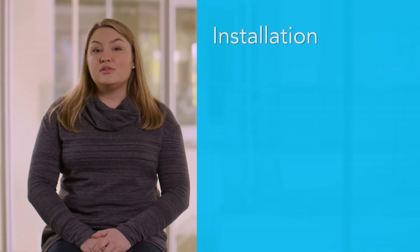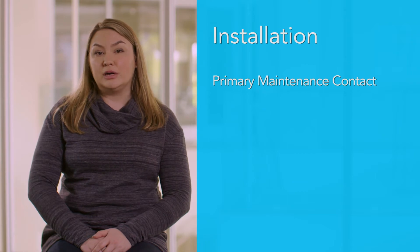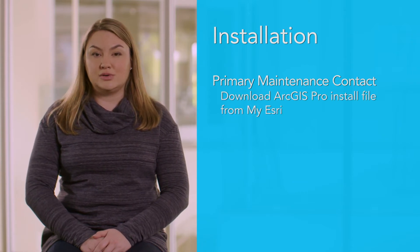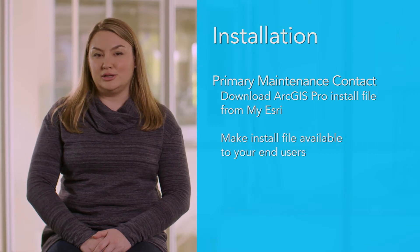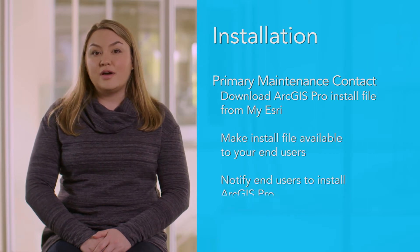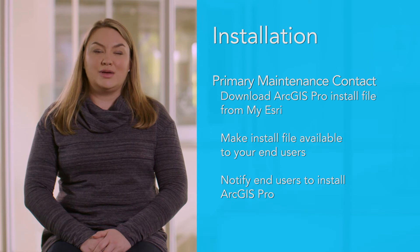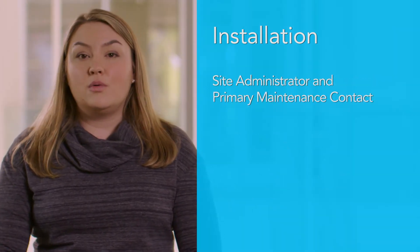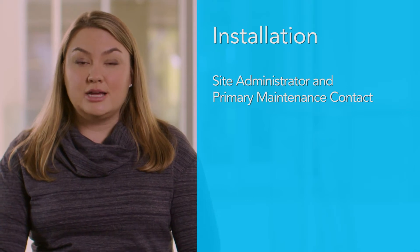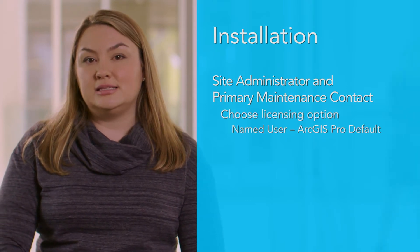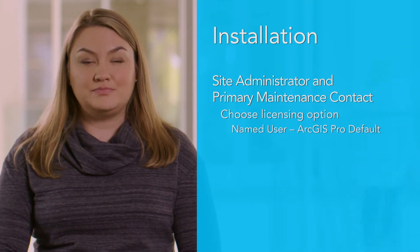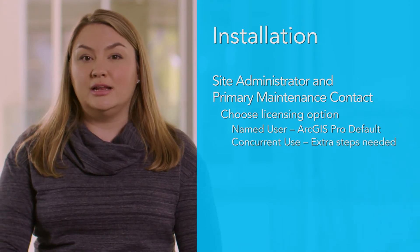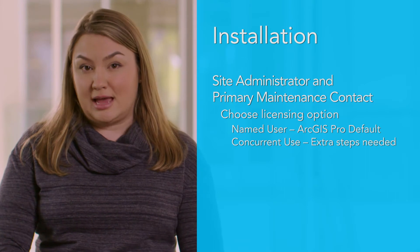First, if you're the primary maintenance contact for your organization, you'll need to download the ArcGIS Pro install file from My Esri and make it available to users on your internal network. Notify your end users of the install file location. If you're a site administrator and/or primary maintenance contact, you'll need to consider the best licensing option for the organization. If you decide on using the concurrent use or hybrid option, you'll need to take additional steps.